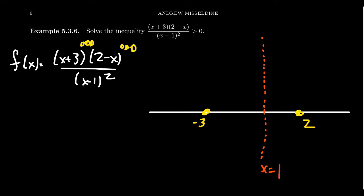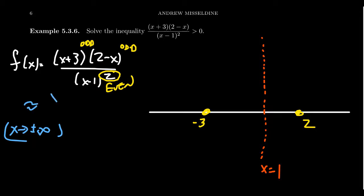For (x−1) in the denominator, the multiplicity is even, so we're going to touch infinity rather than cross it — meaning there's no sign change there. For end behavior, as x approaches ±∞, our function is approximately the leading terms: x from (x+3), negative x from (2−x), and x² from the denominator. That simplifies to negative 1, giving us a horizontal asymptote at y = −1. So the function is below the x-axis as we go far left or right.